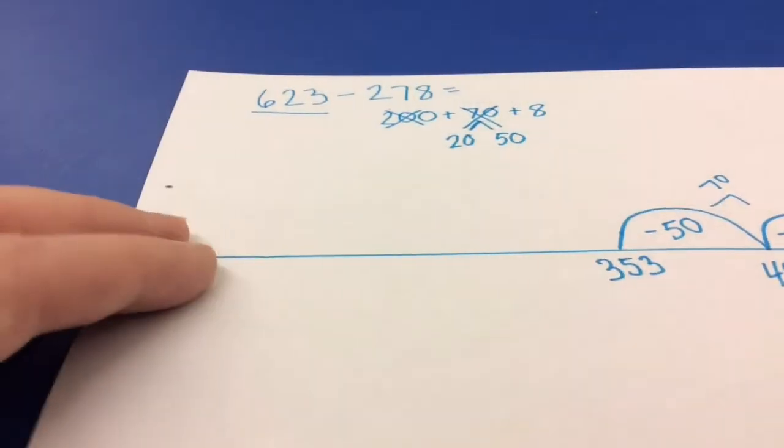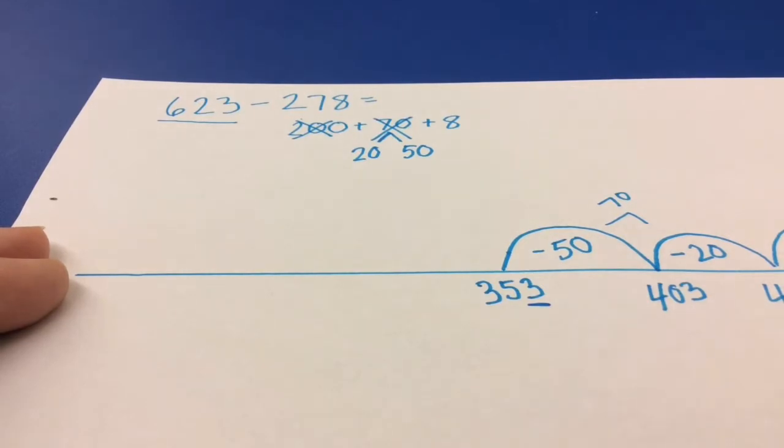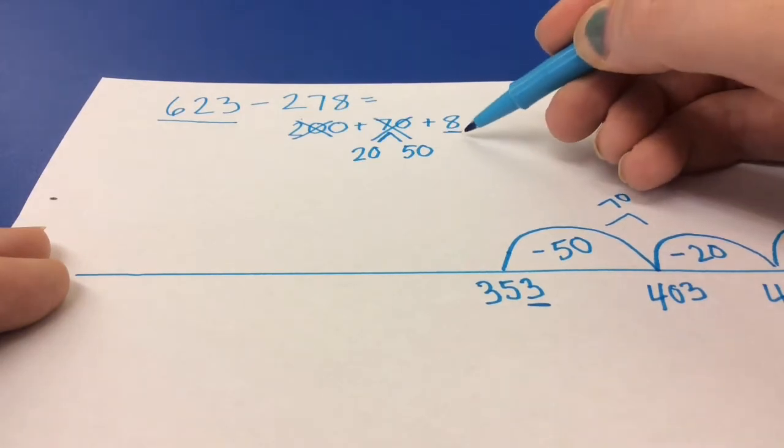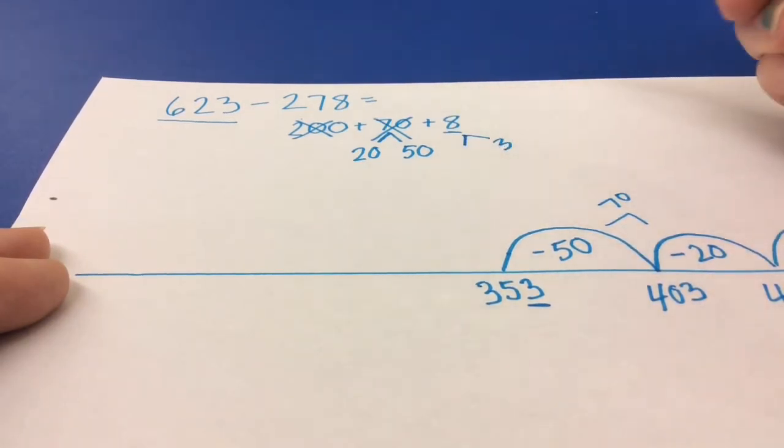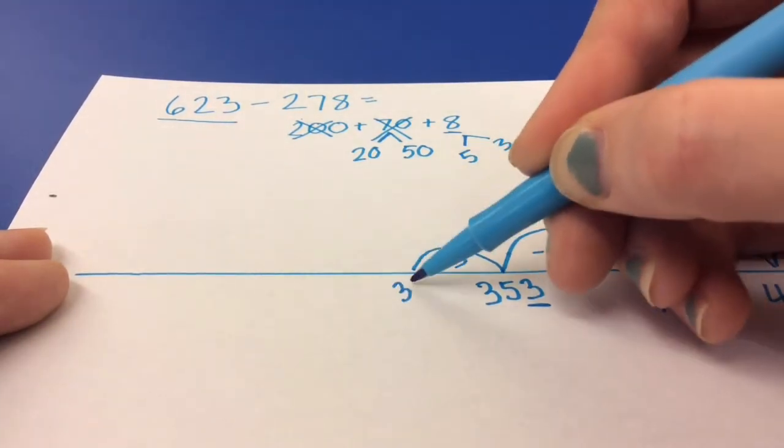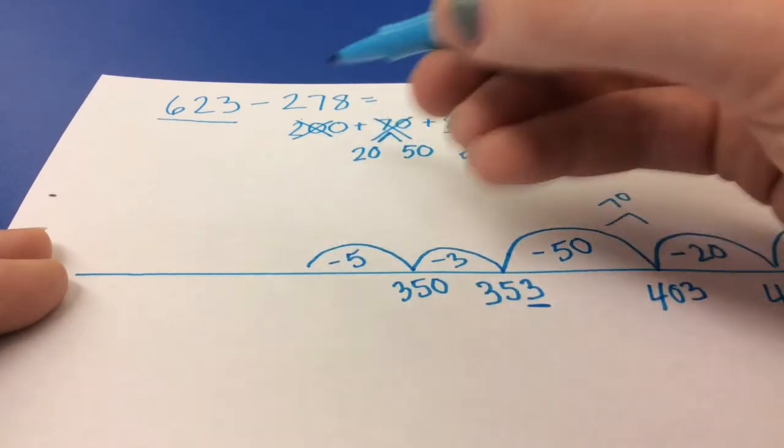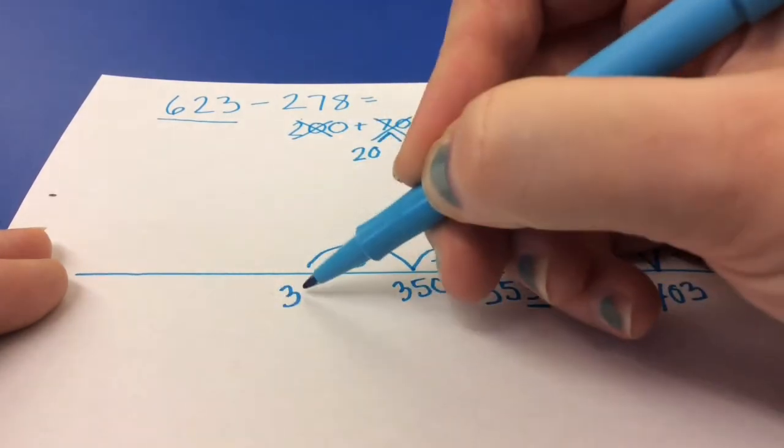So now that I've taken away the 70, I can now take away 8. So I look at that 3, and I look at the 8. I can't automatically see the answer. But I know I can break apart 8 into two different numbers. I can break it apart into 3 and 5. That makes my subtraction a lot easier. If first I take away 3 to get 350. And then I take away 5, which is very easy, at 345.